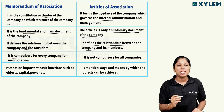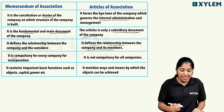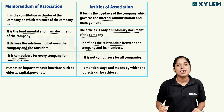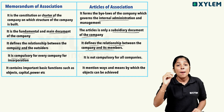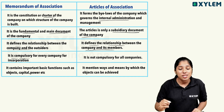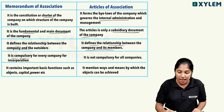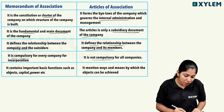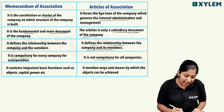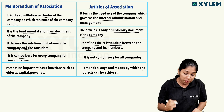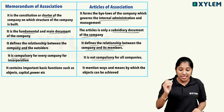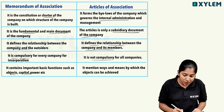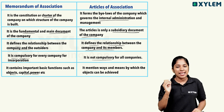The Memorandum of Association is compulsory for every company, whereas the Articles of Association is not compulsory. The Memorandum of Association contains important basic functions such as objects, capital, power, and so on.